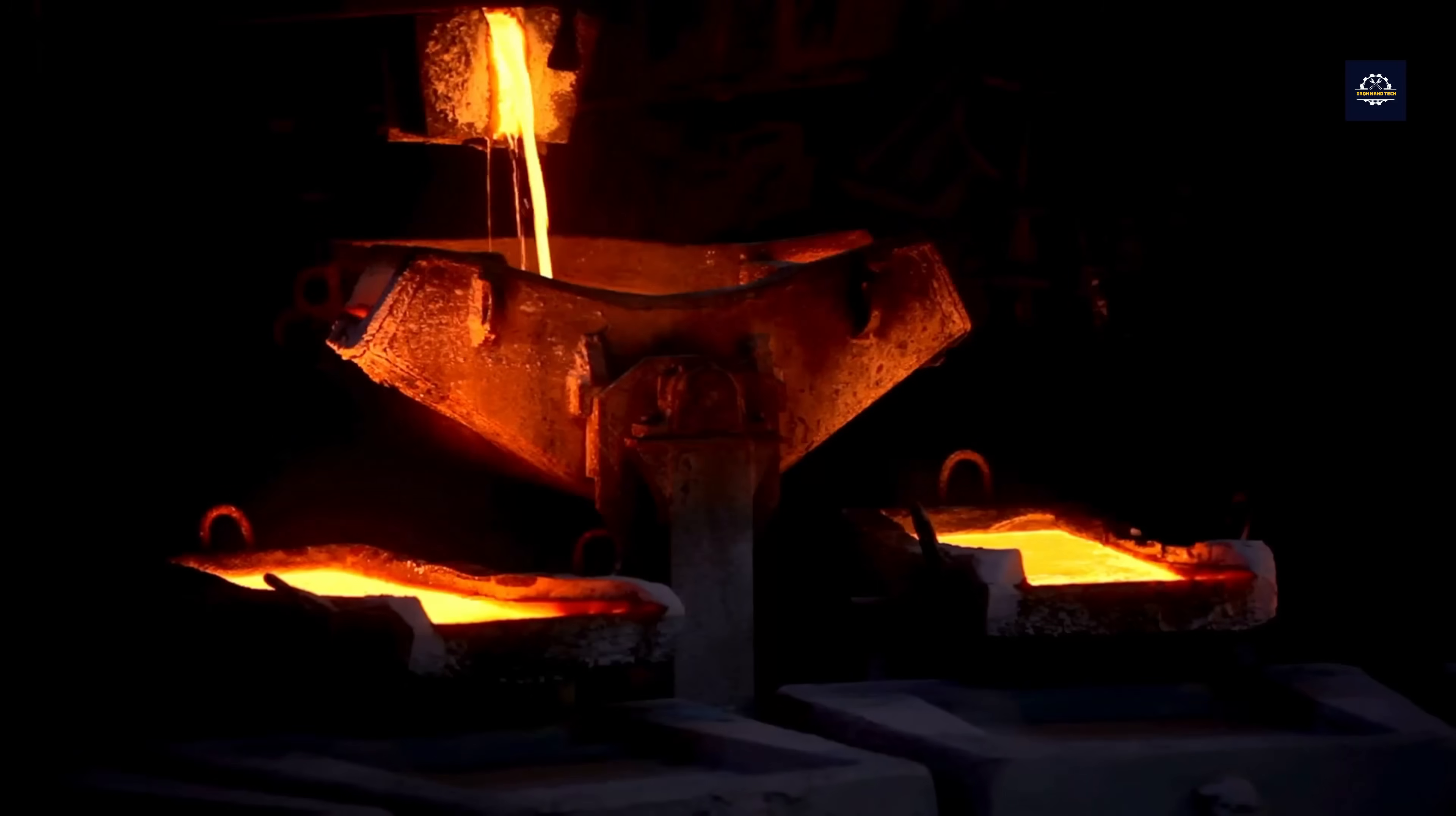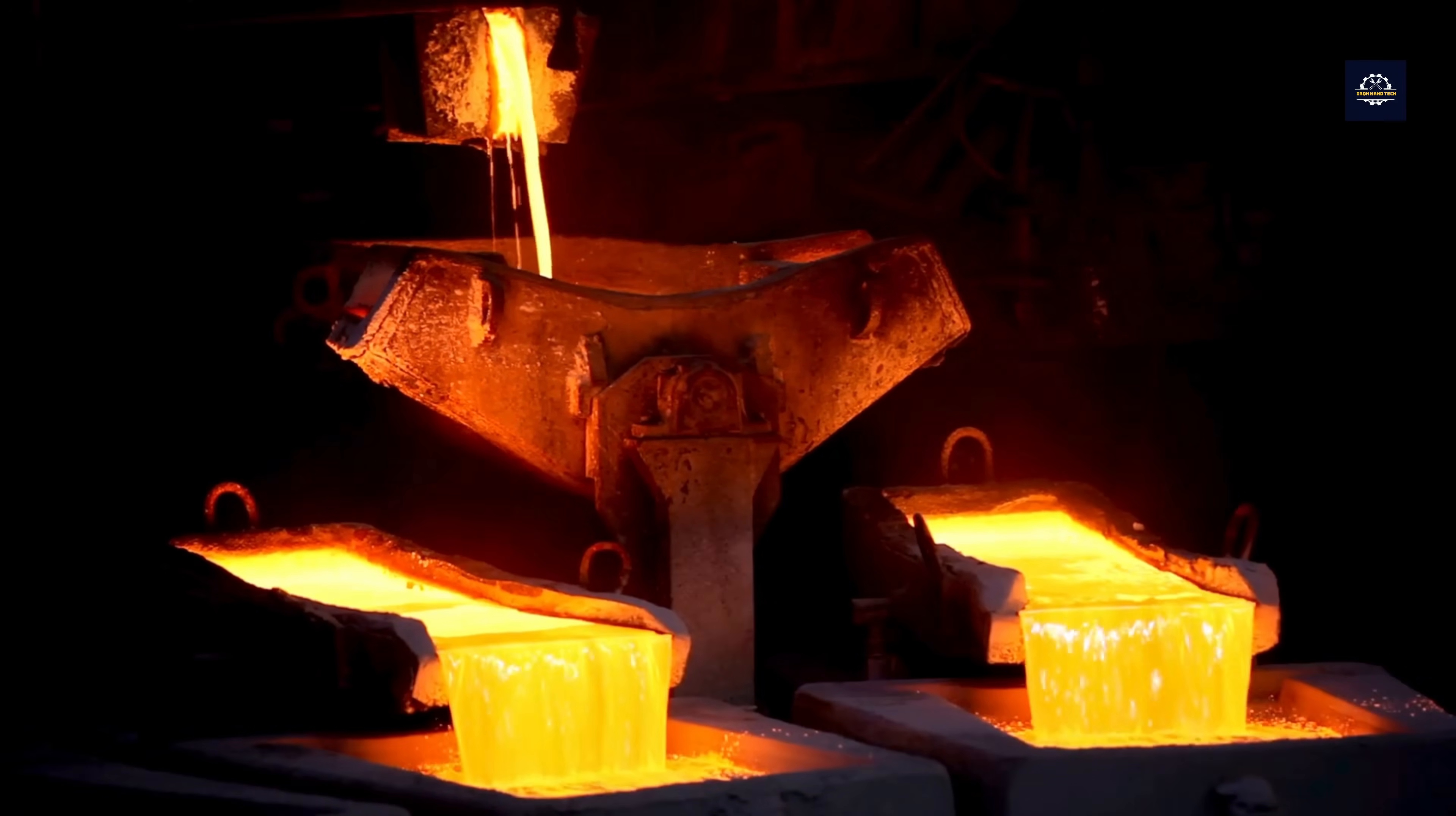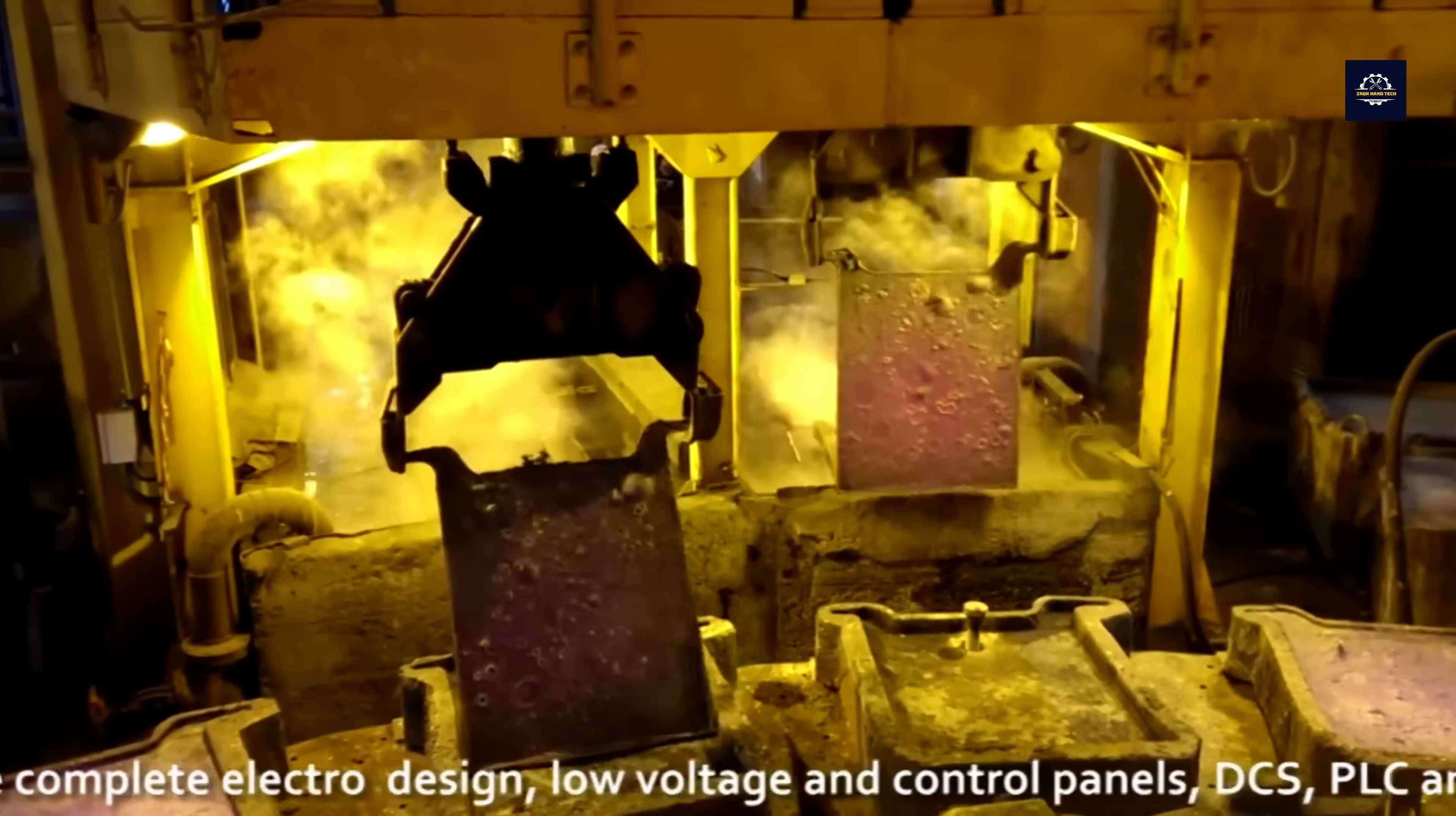After the copper has been refined and purified, the next step is casting. The molten copper is poured into heat-resistant molds, where it quickly cools and hardens into copper ingots.